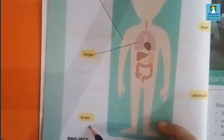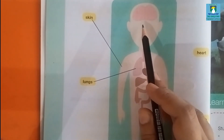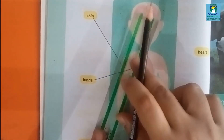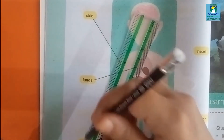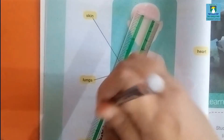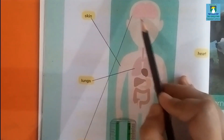Third one is brain, which is present inside our head. So you can match it with brain. It is a picture of brain.